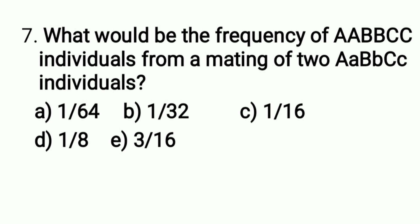What would be the frequency of homozygous dominant ABC individuals from a mating of two heterozygous ABC individuals? The right answer is option A: 1/64. The probability of getting AA from Aa × Aa is 1/4. Similarly, BB from Bb × Bb is 1/4, and CC from Cc × Cc is 1/4. So 1/4 × 1/4 × 1/4 = 1/64.